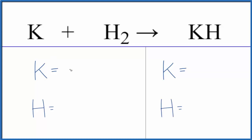So we have one potassium atom, two hydrogen atoms. On the product, we have the one potassium and the one hydrogen.